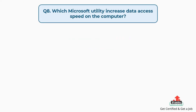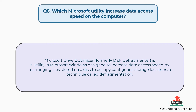Question number eight: which Microsoft utility increased data access speed on the computer? The answer is, Microsoft Drive Optimizer, formerly disk defragmenter, is a utility in Microsoft Windows designed to increase data access speed by rearranging files stored on a disk to occupy contiguous storage locations, a technique called defragmentation.